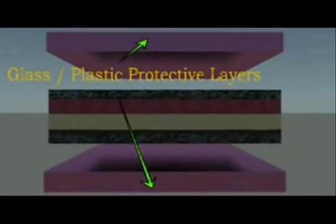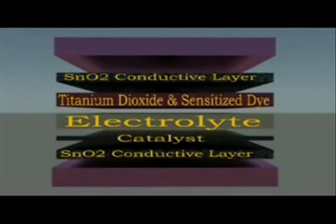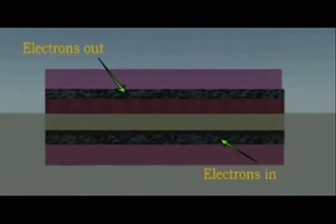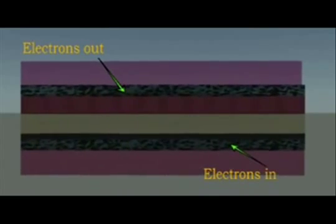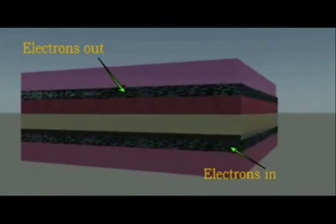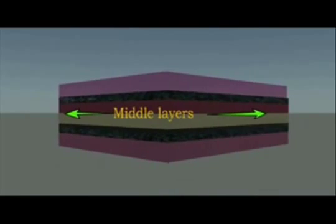The top and bottom layers are protective glass with conducting coatings. Electricity in the form of electrons flows in and out of these conductive coatings while the electrical production process happens in the middle layers.